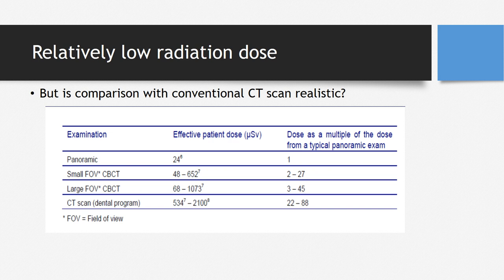Regarding the relatively low radiation dose compared to conventional CT: if a panoramic radiograph dose is taken as 1 (approximately 24 microsieverts), then a small field-of-view CBCT is about 2 to 27 times that of a panoramic radiograph, a larger field-of-view CBCT is about 3 to 45 times, whereas a conventional computed tomography scan utilizes 22 to 88 times that of a panoramic radiograph.